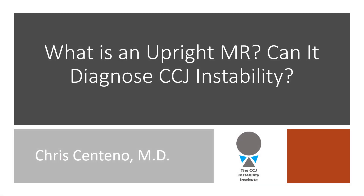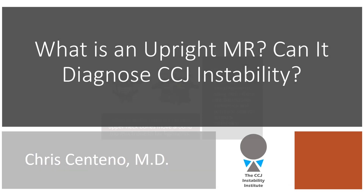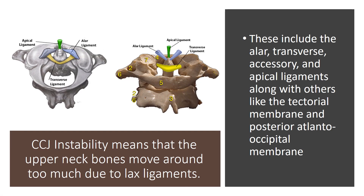Hey, it's Dr. Centeno. What is an upright MRI and can it diagnose CCJ instability? CCJ instability means that the upper neck bones move around too much due to lax ligaments. There are lots of different ligaments up there that can be torn, partially torn, stretched, or just loose due to other problems.